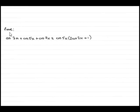Hi, now in this example we've got to prove that cos 3x plus cos 5x plus cos 7x is identical to cos 5x all multiplied by 2 cos 2x plus 1.